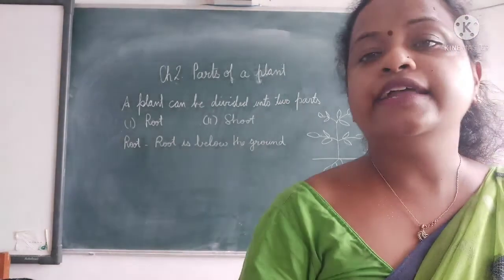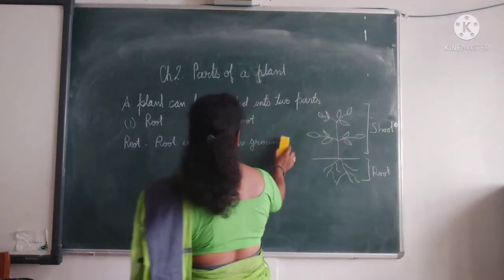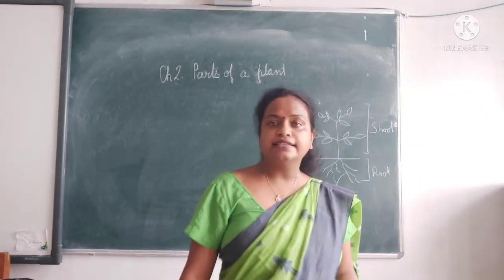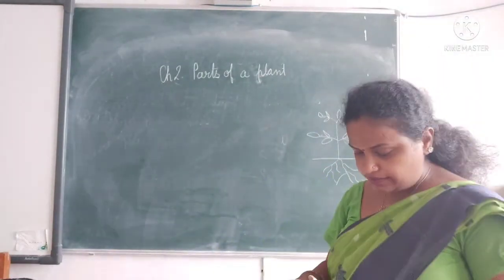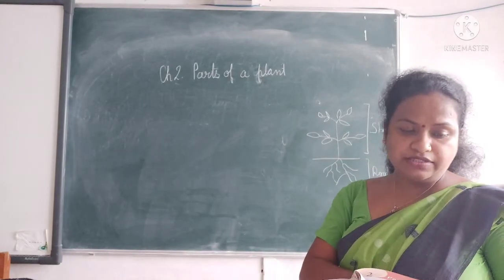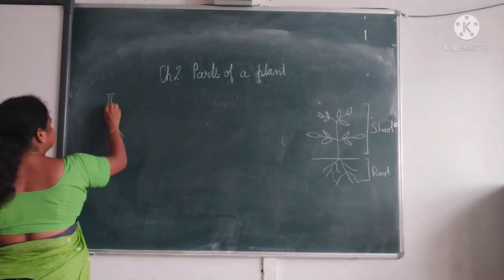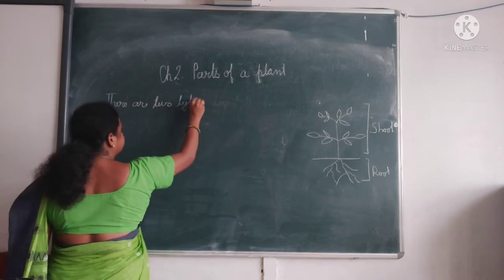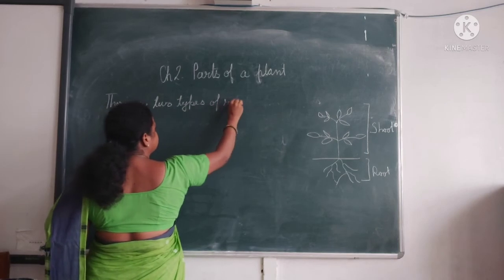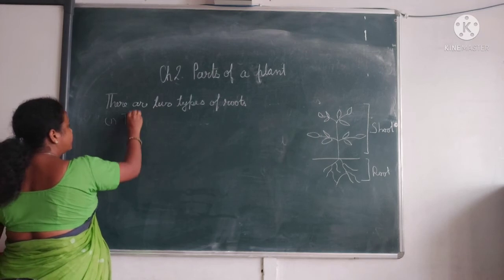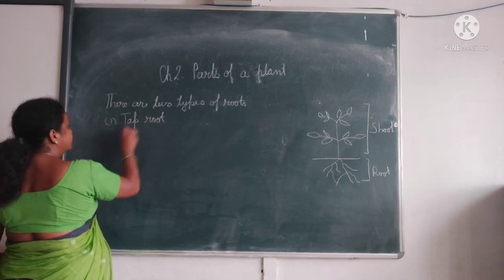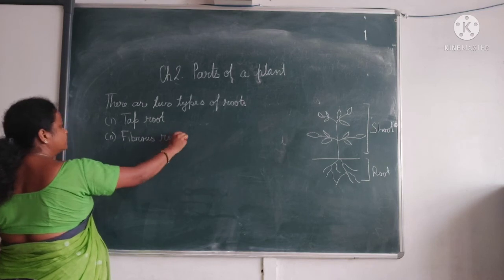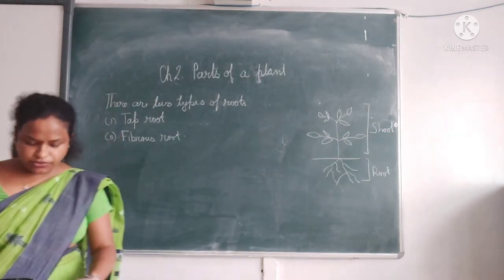How many types of root are there? There are two types of root: one is taproot and the other is fibrous root.